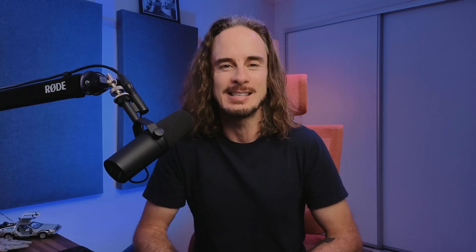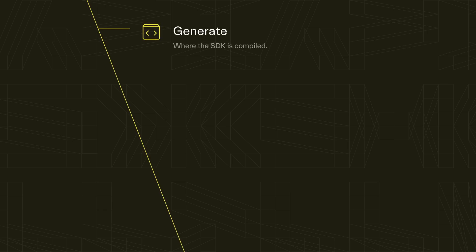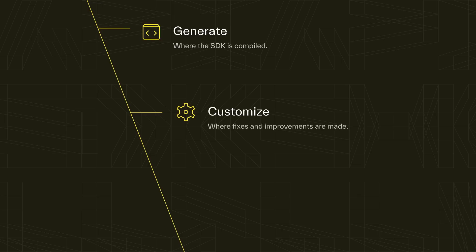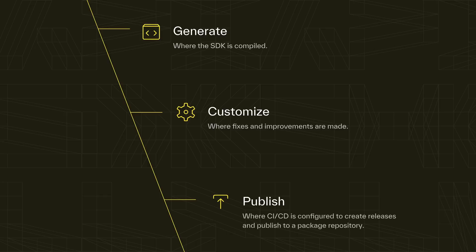Creating an SDK has three phases: Generate, where the SDK is compiled; Customize, where fixes and improvements are made — for example, method names; and Publish, where CI/CD is configured to create releases and publish to a package repository. Let's get into it, using TypeScript and the Discord API to demonstrate.